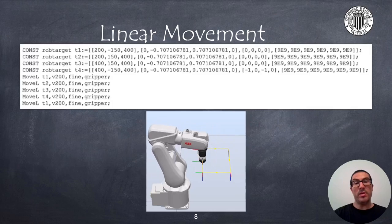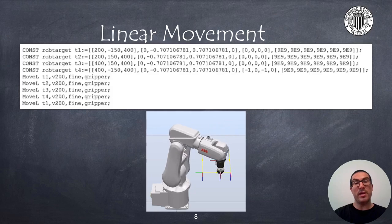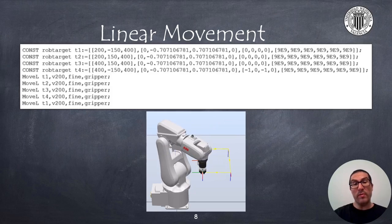Here, we see a very similar example as the previous one, with the difference that now it's performing a linear movement. As you can see, the gripper was moving just along the path, while the only difference in the code was the type of instruction used.